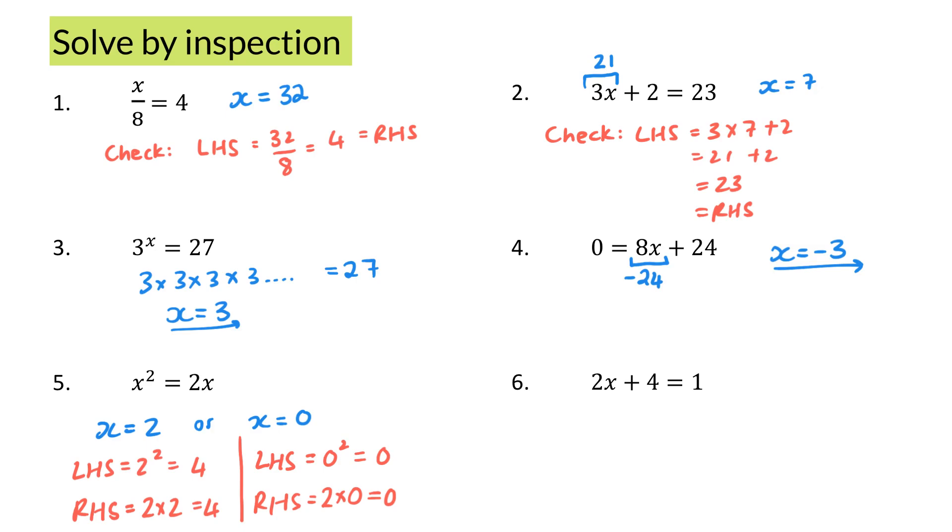So this equation actually has two solutions: x is equal to 2 or x is equal to 0. Now when you solve by inspection, sometimes you only give one solution. So that's a limitation to solving by inspection. It means that you don't always think of all the solutions that are available.